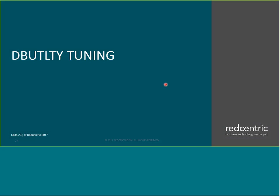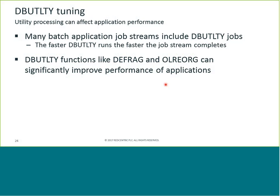Now on to DB Utility tuning. I've come across sites that said they had a major performance issue and weren't worried about DB Utility because each run was only five minutes. But when I asked how many they had in their schedule, they said hundreds. We made simple changes to DB Utility tuning — buffer sizes and the way utility paths were coded — and just by doing that, saved an hour off the critical path of the overnight batch, without changing any application code. Many application job streams include DB Utility steps, so the faster those run, the faster the job stream completes.